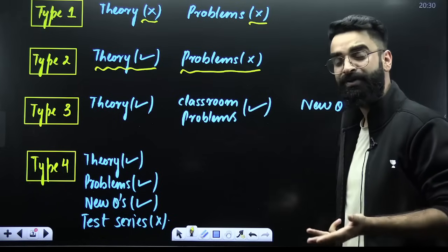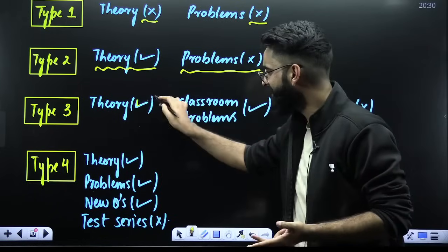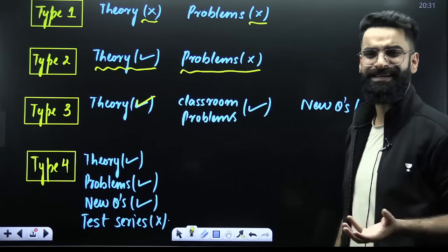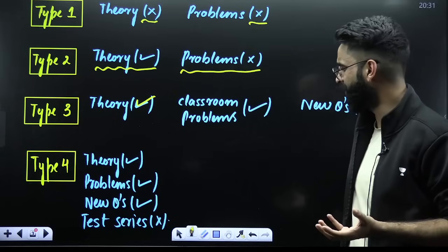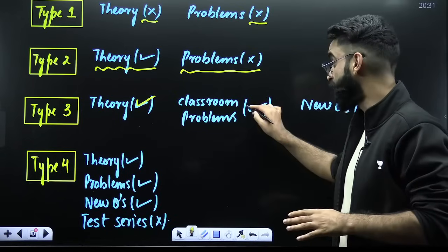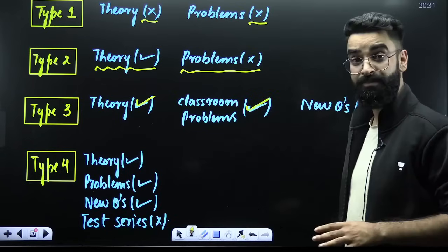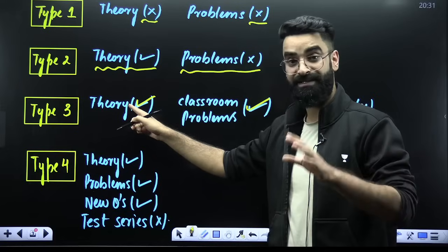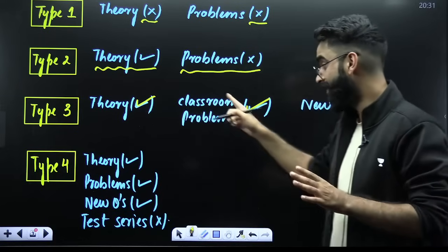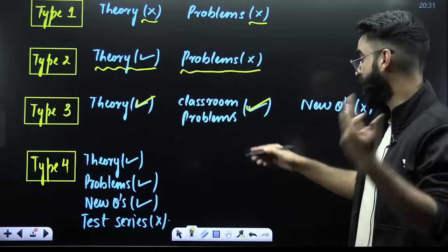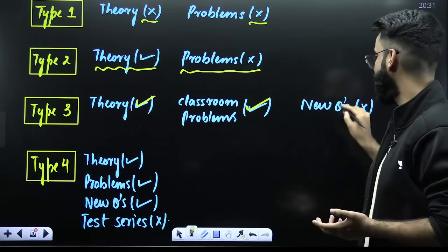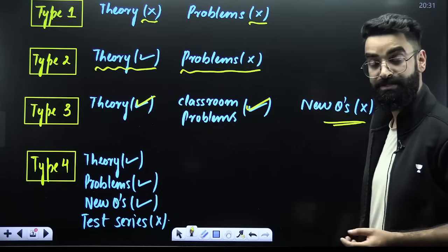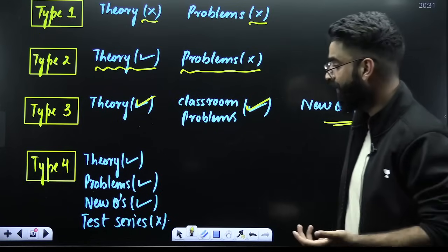Type 3 students can easily understand the theoretical part and can even do the classroom problems. After your teacher discusses the theory, they are able to do the classroom problems. But after that, they are unable to solve new questions. This is your type 3 category.